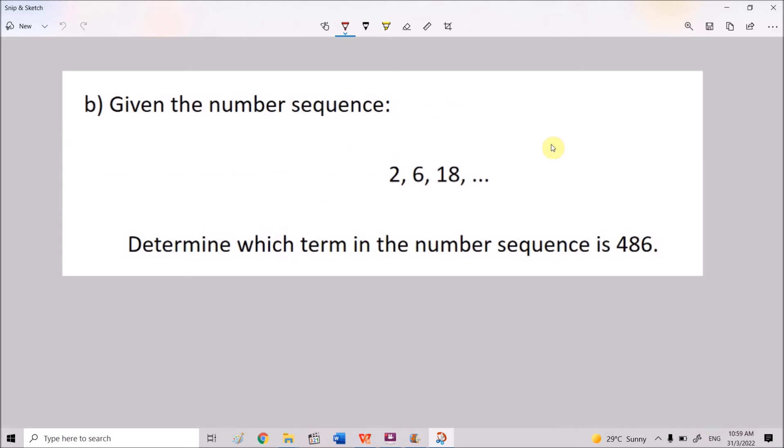For this example, given the number sequence is 2, 6, and 18, determine which term in the number sequence is 486. So again, when the number sequence continues here, one of this term will be 486. Hence, we need to determine and identify which term is it. So we need to complete or extend the sequence. 2 plus 4 is 6, 6 plus 4 is 10. No. Hence, adding 4 is not a pattern. So we try multiplication. 2 times 3 is 6, 6 times 3 is 18, 18 times 3 is 54, 54 times 3 is 162, and 162 times 3 is 486, which is the number that we are looking for. So we stop here. And then we count. 1, 2, 3, 4, 5, 6. So it means that 486 is the sixth term.